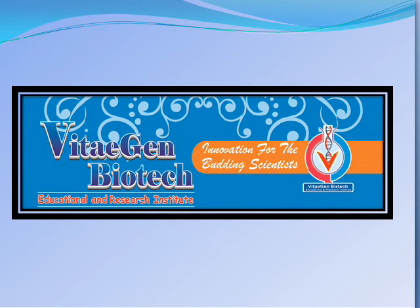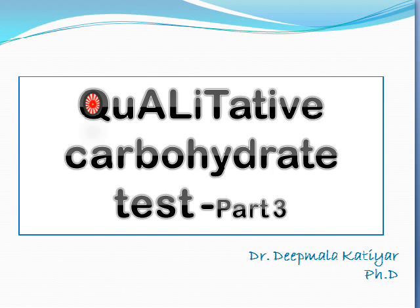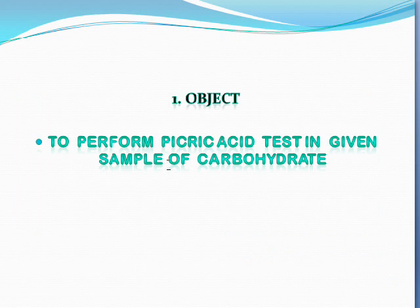In the previous video, I discussed carbohydrate tests: Molisch test, iodine test, Fehling test, and Benedict test. Today I will tell you about the picric acid test and the anthrone test. The object of this test is to perform the picric acid test for a given carbohydrate solution. Before starting the procedure, it is very important to know the principle of this experiment.